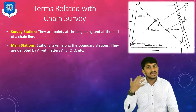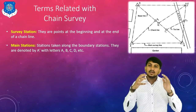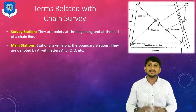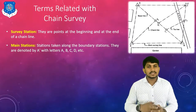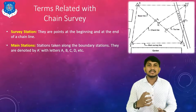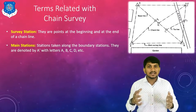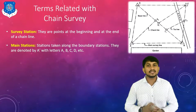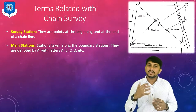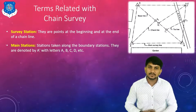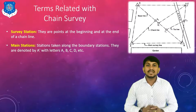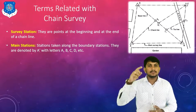Main stations are the stations along the boundaries. Here A, B, C, and D are called main stations, denoted by capital letters. The lines connecting main survey stations are called main survey lines. Here AB, BC, CD, DA, and BD are the main survey lines. The longest line is called the base line — here BD is the base line.